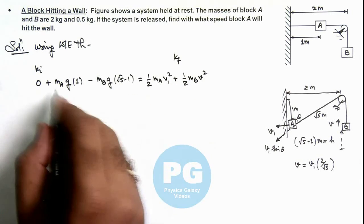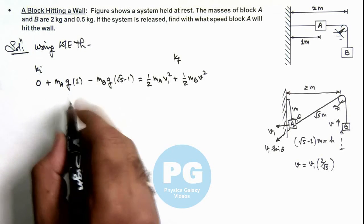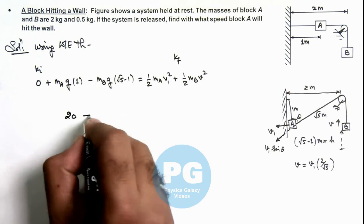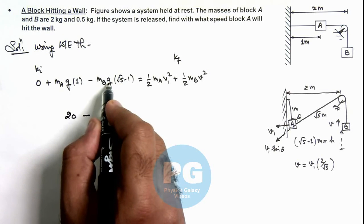We substitute the values: mass of block A is 2 kilograms and g is 10, so this will be 20, minus mass of block B is 0.5, g is 10, so this will be 5.